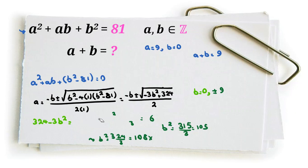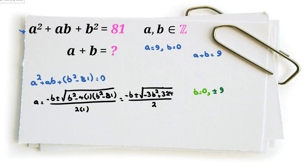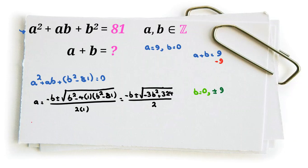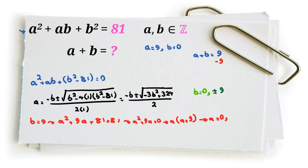Now substituting back into the main equation. If b equals 0, then a squared equals 81, so a equals plus or minus 9, giving a plus b equals 9 or negative 9. If b equals 9, then a squared plus 9a plus 81 equals 81, so a squared plus 9a equals 0, meaning a(a plus 9) equals 0. So a equals 0 or a equals negative 9, giving a plus b equals 9 or 0.